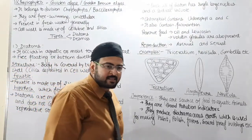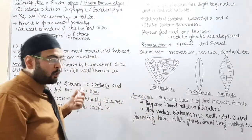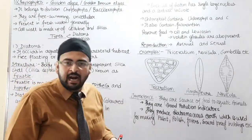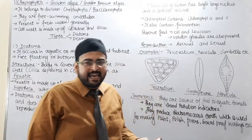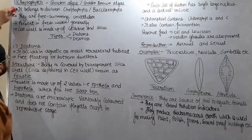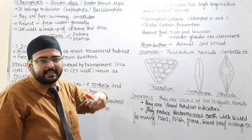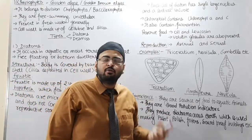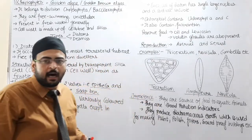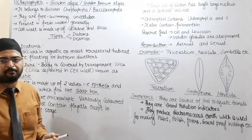NCERT में Kingdom Protista की जो पहली category दी है वो है Chrysophyte. This word Chryso means Golden and Phyte means Plant-like. लेकिन इसको आप Plant मत समझ बैठना, ये कोई Plant नहीं है, ये एक Eukaryotic Unicellular Organism है. Chrysophyte एक Golden color का Plant-like organism है, but it is Unicellular and Eukaryotic. Plants are generally Multicellular, and it belongs to Kingdom Protista. Golden Brown color है due to presence of various types of pigments.